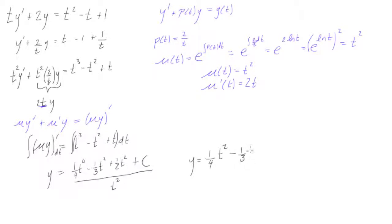plus 1/2 t squared divided by t, actually the t's disappear now, and this will be plus C over t squared.